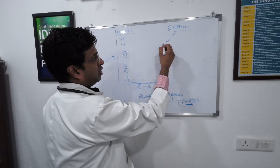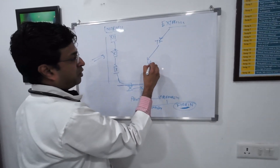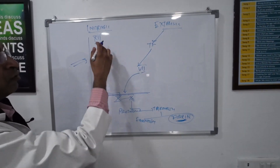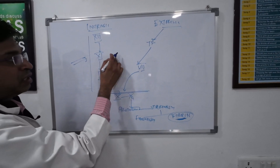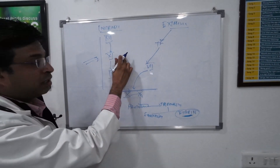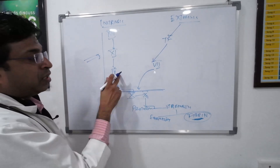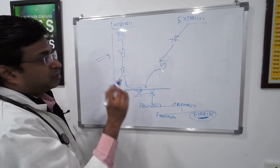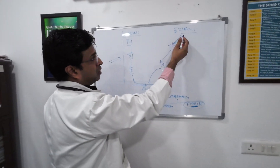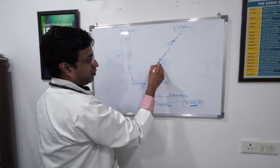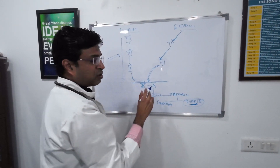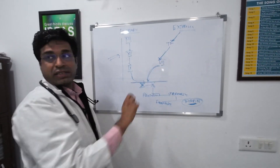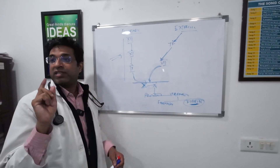Above the common pathway is the intrinsic pathway. In the extrinsic pathway, tissue factor gets activated first. Tissue factor activates factor 7, and factor 7 activates factor 10. So both pathways converge at factor 10.